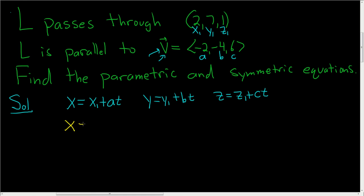So X is equal to X sub 1, which is 2, so this is 2. And then A is negative 2, so this is going to be minus 2T. Y is equal to Y₁, and Y₁ is 7, so this is 7. And then B is negative 4, so it's going to be minus 4T.